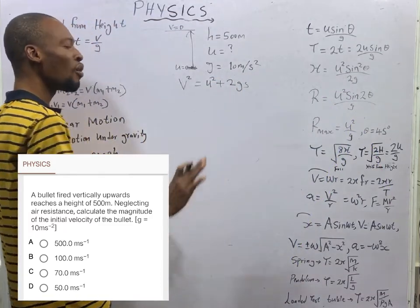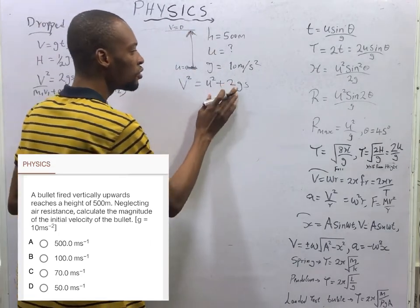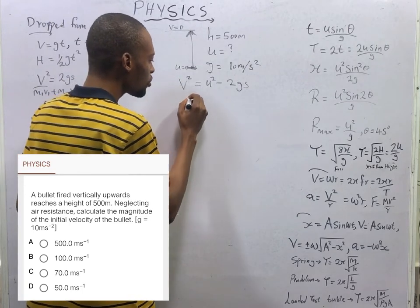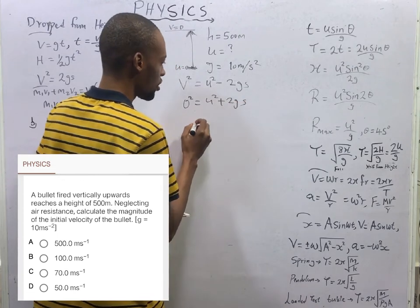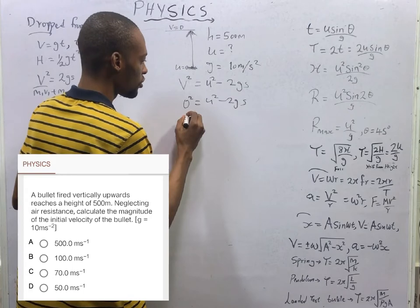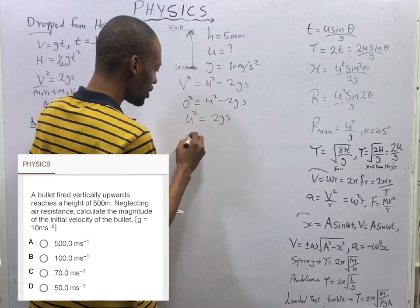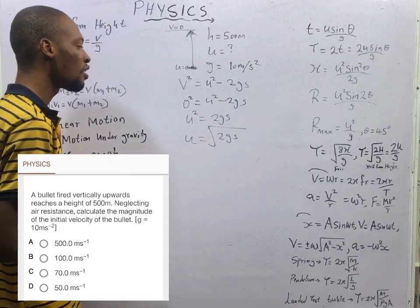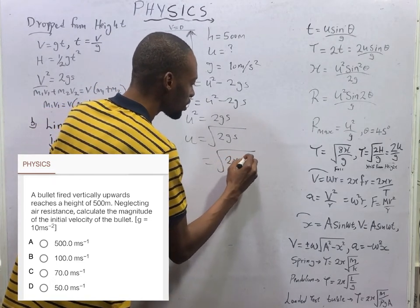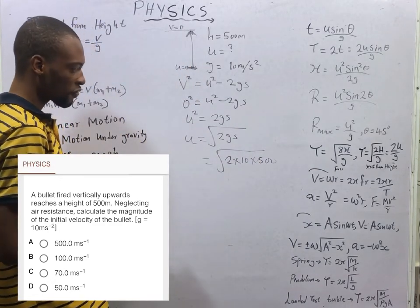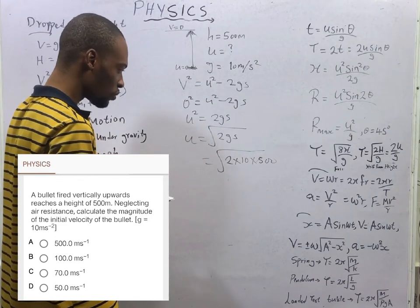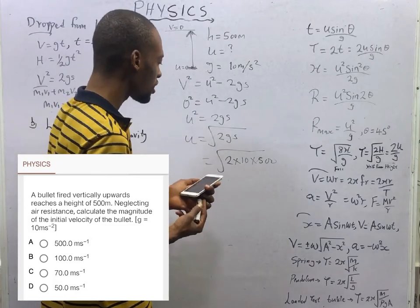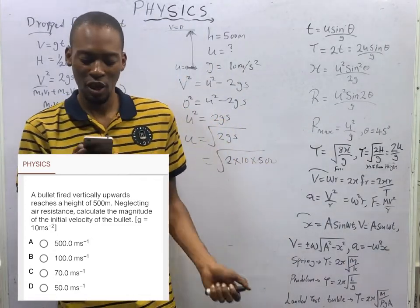Rearranging: U² equals 2GS, so U equals √(2GS). Substituting: U equals √(2 × 10 × 500) = √10000 = 100 m/s. Because 100 × 100 = 10,000, the initial velocity is 100 meters per second, making option B the correct answer.